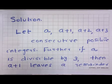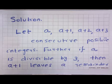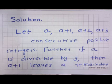Let me repeat: if you have a, a plus 1, a plus 2, etcetera to be consecutive positive integers, with a divisible by 3 — meaning it leaves remainder 0 when divided by 3 — then a plus 1 will leave remainder 1, a plus 2 will leave remainder 2, and the next number a plus 3 will again be divisible by 3, and so on.